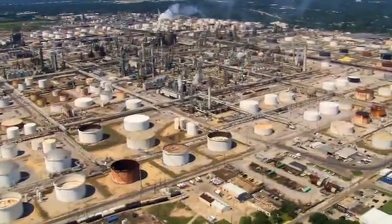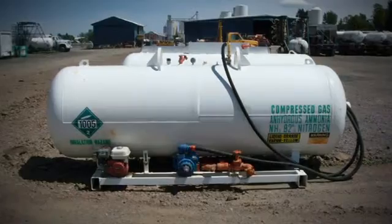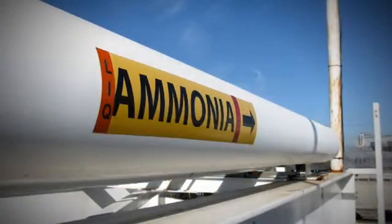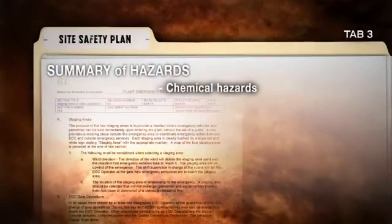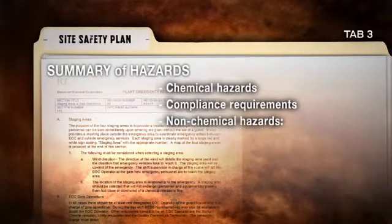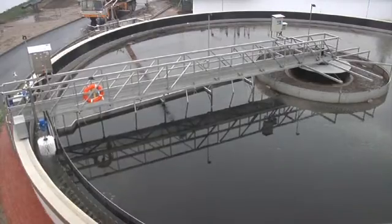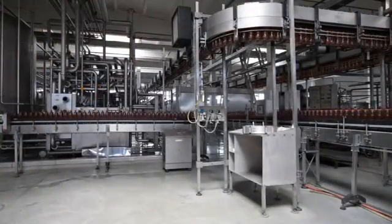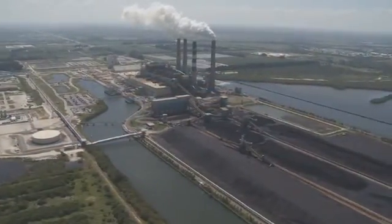A comprehensive Site Safety Plan will be tailored to the specific location and available resources. The Summary of Hazards section will contain information on the likely chemical hazards present that a team will encounter during the course of the response. It will also identify compliance requirements with applicable safety and health regulations. An overview of hazards other than chemical — such as confined space, mechanical, electrical, biological, and physical hazards — should be identified. At facilities that produce or use chlorine, this can be done in advance, as on-site personnel control what enters the facility and should be well aware of the hazards within.